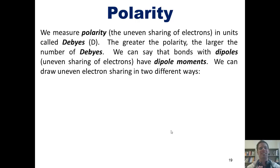We can say, then, that bonds with dipoles, that is, an uneven sharing of electrons, have dipole moments. We can draw uneven electron sharing in two different ways. In one of them, we show this Greek symbol, delta, with a negative next to it, adjacent to the atom that has a strong partial negative charge, the more electronegative atom. And we draw the same symbol with a positive next to it, adjacent to the atom that is less electronegative, and therefore has the more partial positive charge. Alternatively, we can just draw this symbol, a crossed arrow pointing toward the more electronegative atom, and thus the one that has the stronger negative partial charge.